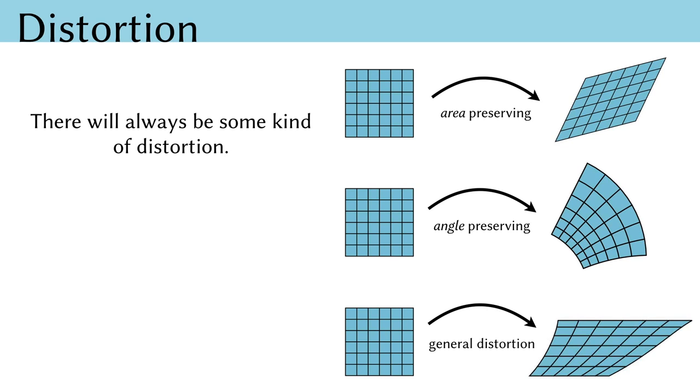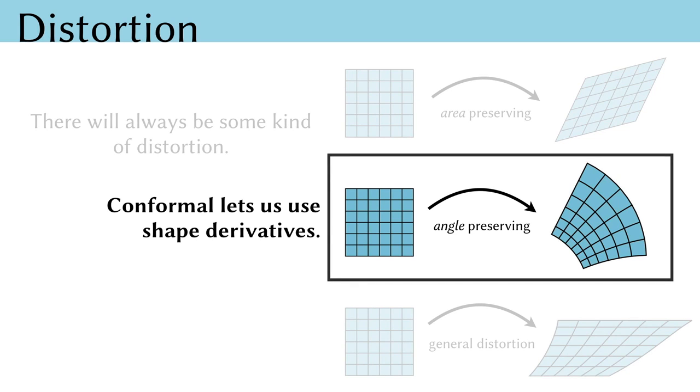A first thing to note is that when mapping a surface to the plane, distortion is an inevitable fact of life. If the cut surface has any curvature, there will necessarily be some amount of distortion in any parameterization. On the right, we visualize the different types of distortion for a local patch. Locally, a map might preserve areas, preserve angles, or more generally preserve neither, distorting both angles and area. One of the primary insights of our work is that this middle class of maps, conformal maps which preserve angles, will allow us to apply techniques known as shape derivatives to the problem.